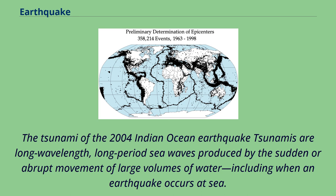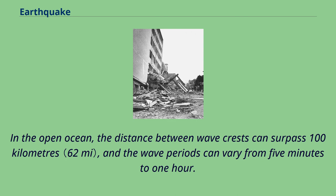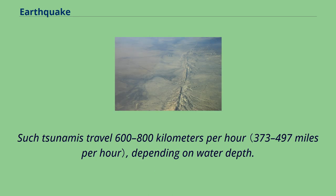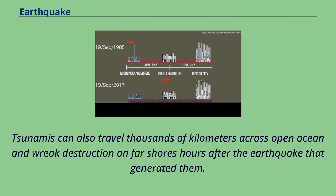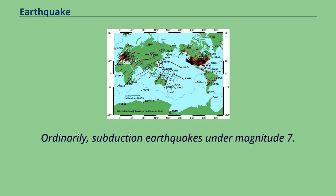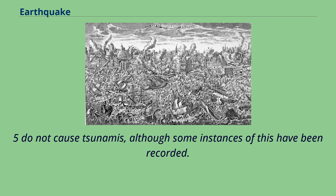Tsunamis are long wavelength, long period sea waves produced by the sudden or abrupt movement of large volumes of water, including when an earthquake occurs at sea. In the open ocean, the distance between wave crests can surpass 100 kilometers, and the wave periods can vary from 5 minutes to 1 hour. Such tsunamis travel 600 to 800 kilometers per hour, depending on water depth. Large waves produced by an earthquake or a submarine landslide can overrun nearby coastal areas in a matter of minutes. Ordinarily, subduction earthquakes under magnitude 7.5 do not cause tsunamis, although some instances have been recorded.